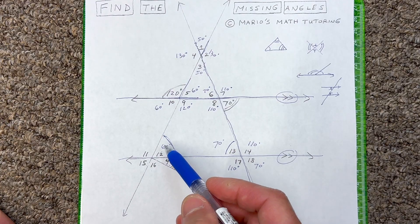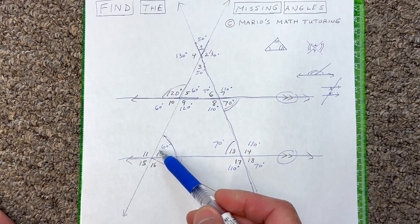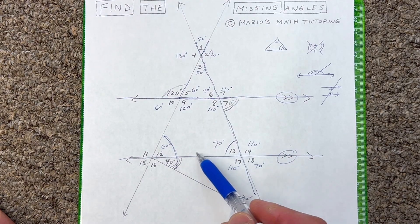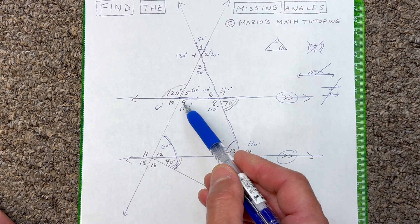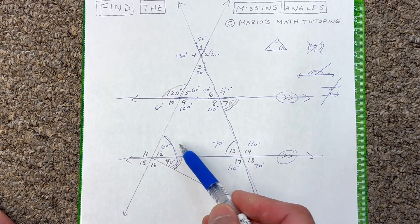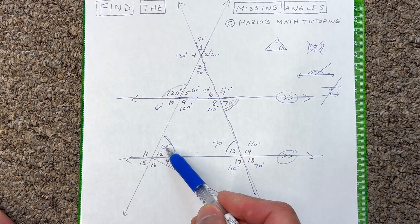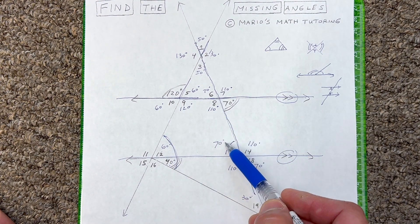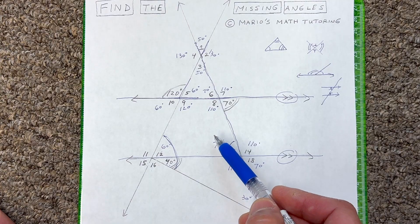So if the full angle is 100 and the given portion is 40, this remaining angle here has to be 60 degrees. Interesting to note: this shape is a quadrilateral, so all angles add up to 360 — which you can verify as 180 plus 180 equals 360.